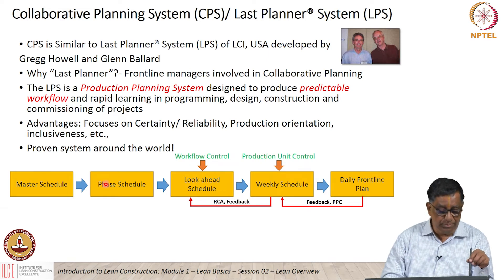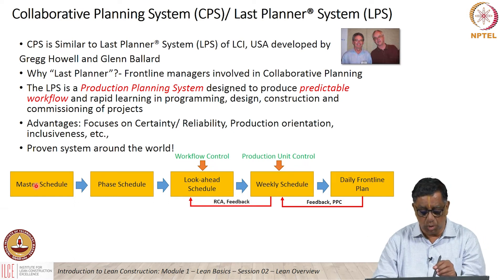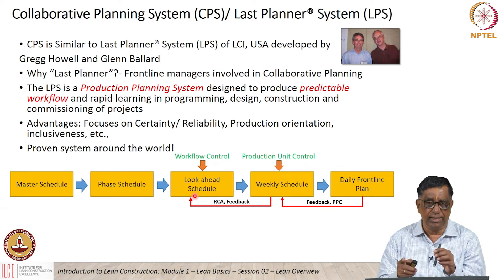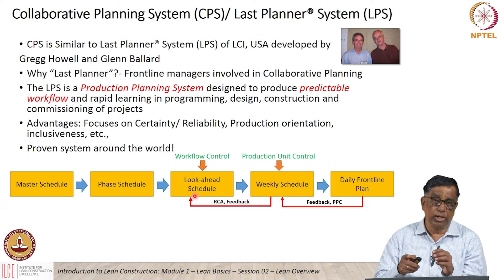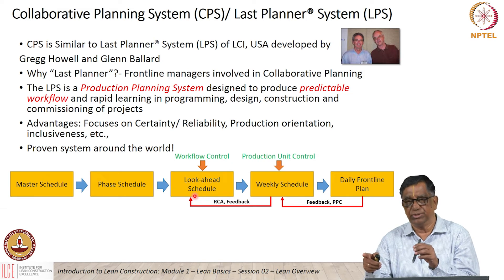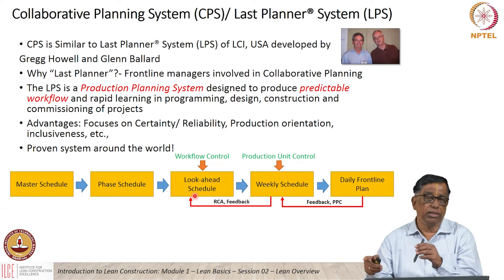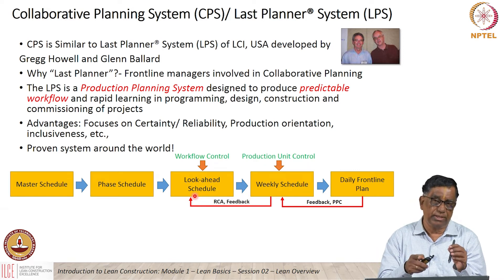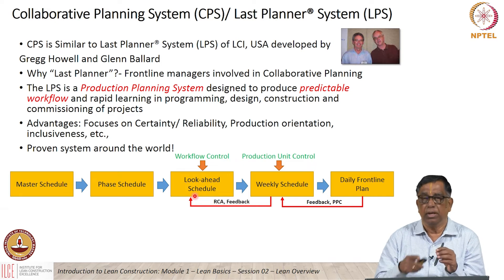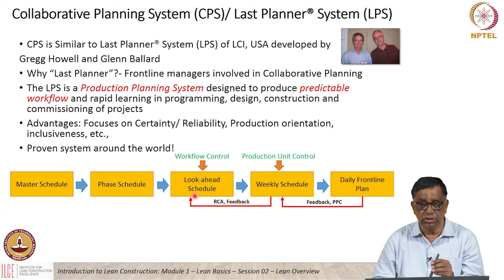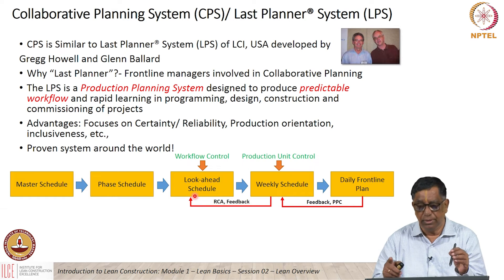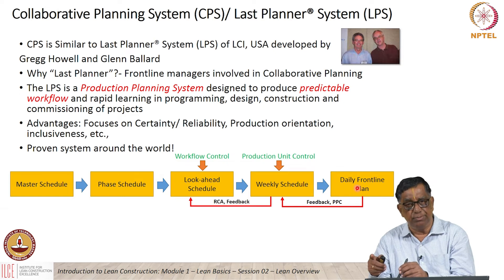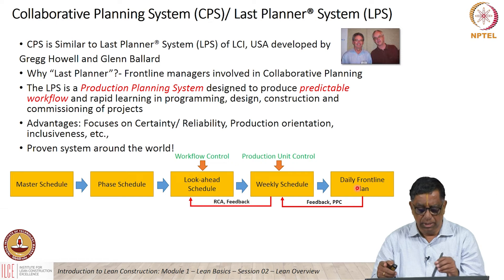In CPS, we have a main schedule made at the beginning looking at milestones. From that we make a number of different phases. When looking at the current week, the work would have been reviewed along with a look-ahead window covering typically 6 weeks. By the time we reach the 6th week, that week's work would have been reviewed at least 5 times, with constraints identified and all bottlenecks removed beforehand. In the 6th week, work should go through like a breeze — we eliminate uncertainties and get into a production system. Every day we check using a metric called PPC, Percent Plan Complete, to measure the efficacy of the system and keep improving it.